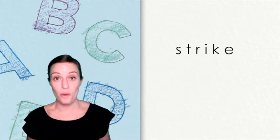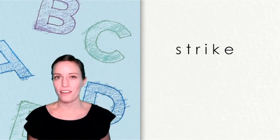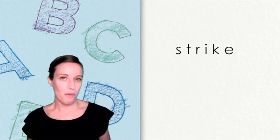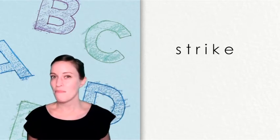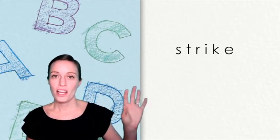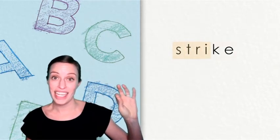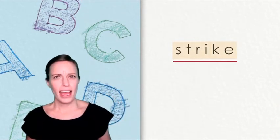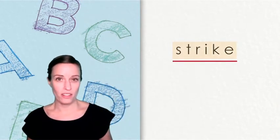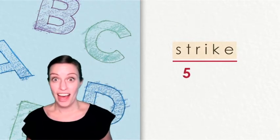Here is another word for us to read. Again, I see that magic E outside of the word. So I know that will make the I say its long vowel sound. I. Tap this word out with me. S-T-R-I-K. Strike. That's it. How many sounds were there in the word strike?